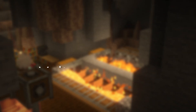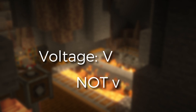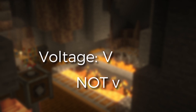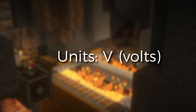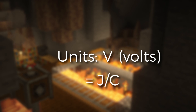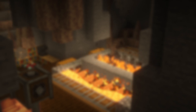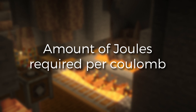Now to begin, voltage is signified by the letter capital V, not to be confused with the lowercase v for velocity. Its units are V for volts, but is also equivalent to joules per coulomb. And this can already tell us a lot about what voltage is — it's the amount of joules or energy required to move one coulomb, or the amount of charge through some sort of potential difference.